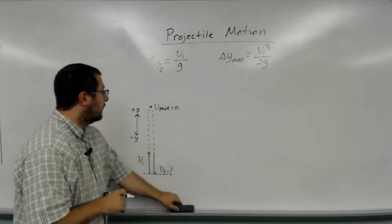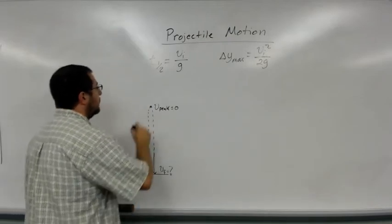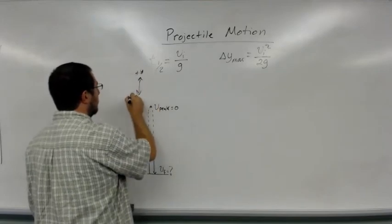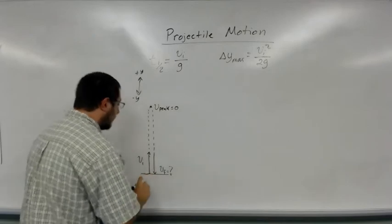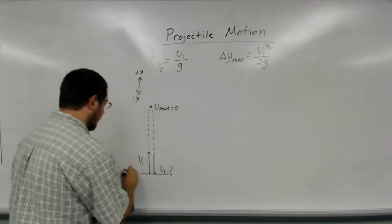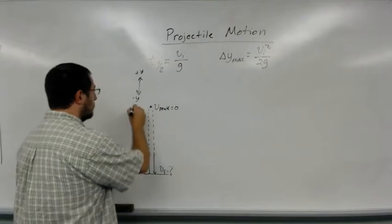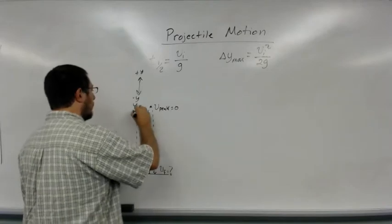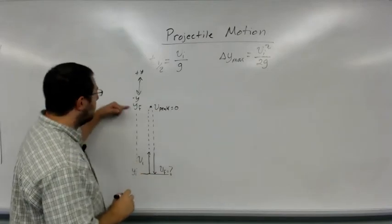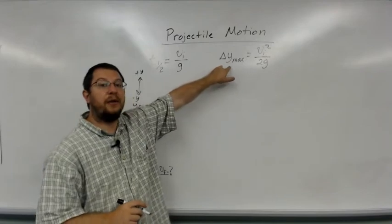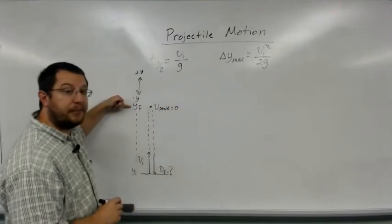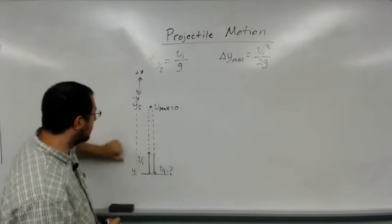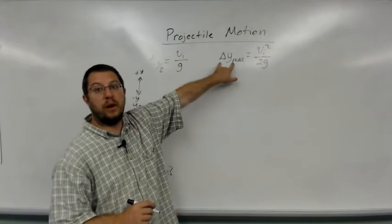Here's where a lot of people are confused. I'm going to redraw my coordinate system. We have to define this as y initial and this as y final if we're looking at the motion upward. Since Δy means final minus initial, I take the final peak minus the initial position. Since upward is positive, this is a positive quantity.